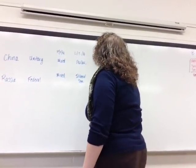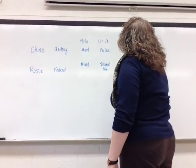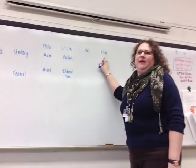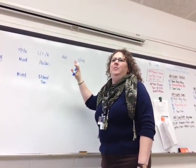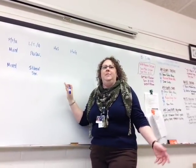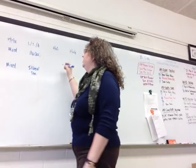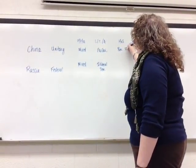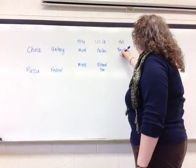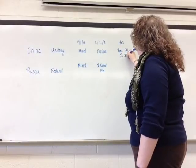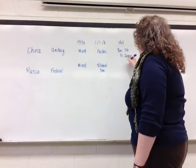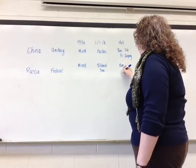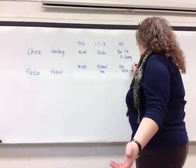What else do we have on that list? Head of state and head of government. Typically your head of government has more power, but for both China and Russia, it's kind of the opposite. The head of state in China would be the president, also called the Secretary General, and that's Xi Jinping. In Russia, that would be the president, and that would be Putin.